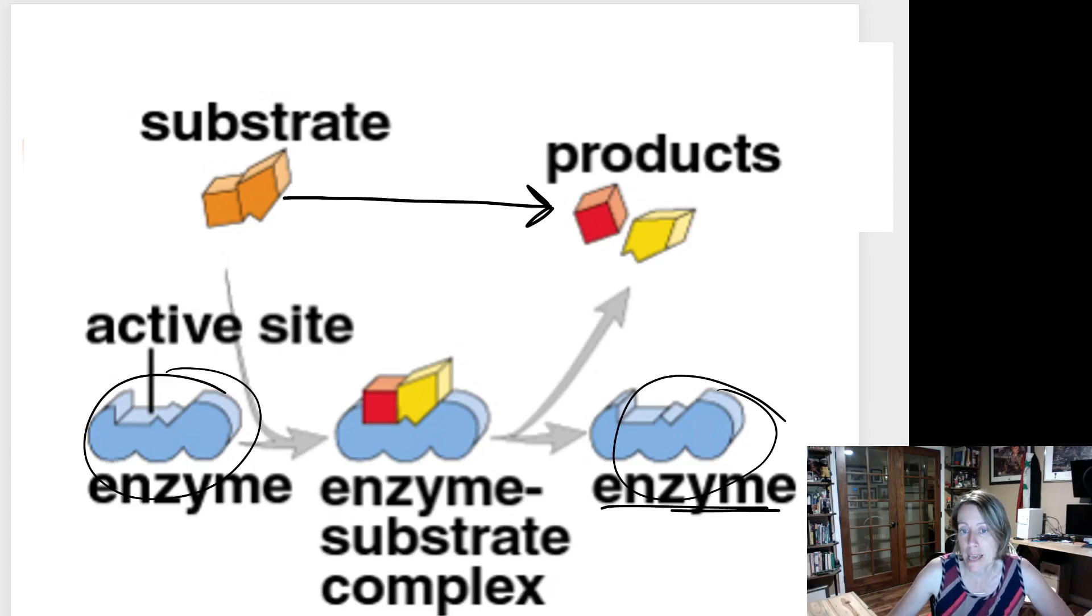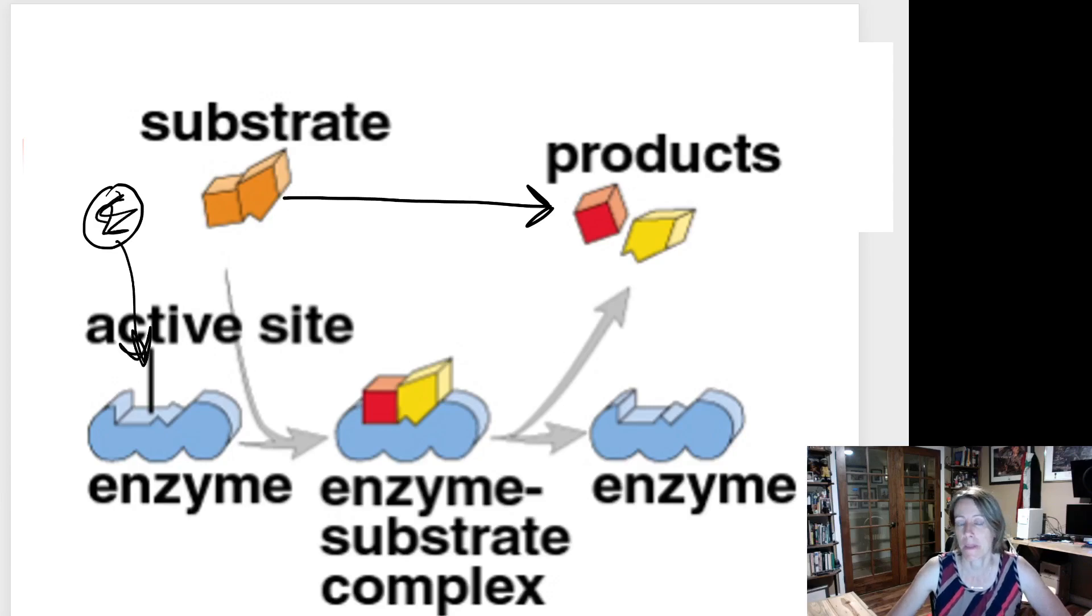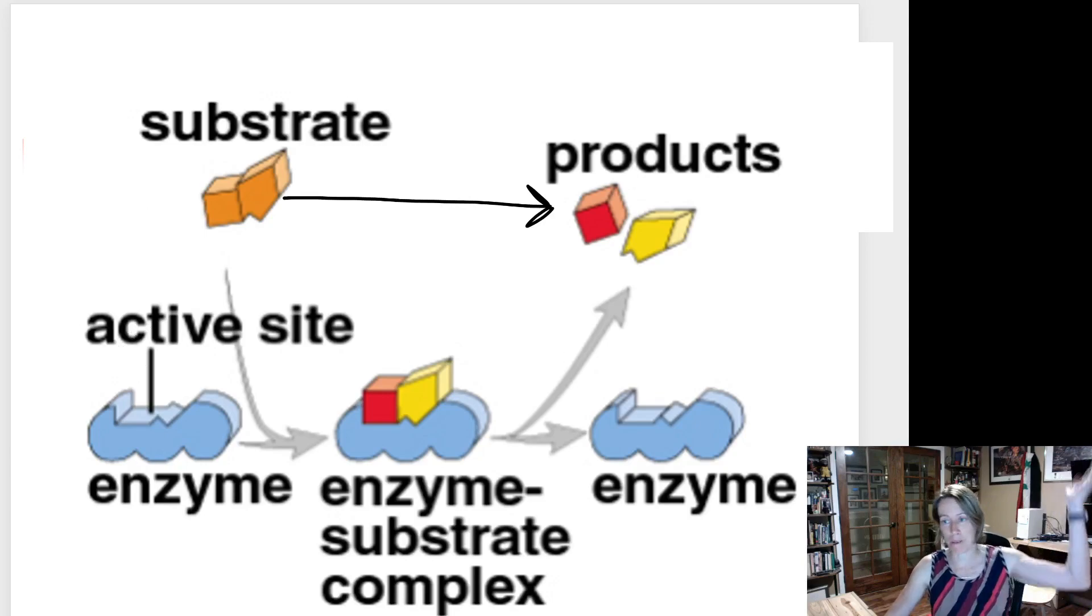If another orange substrate molecule happened to wander by, it could sit down in this enzyme's active site and the enzyme could do the job all over again. The enzyme can be used multiple times to work on this kind of substrate. If a different molecule came along with the wrong shape, nothing would happen - it would just bounce in and out.